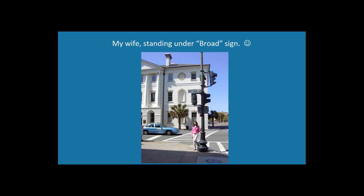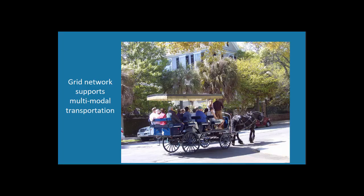Here's the famous intersection in the historic part of Charleston — the four corners of government. The grid in Charleston supports not only pedestrians but horses. It's an area that can accommodate a lot of different people without getting congested, because of the grid network, and gives you a lot of options in terms of how to get around.